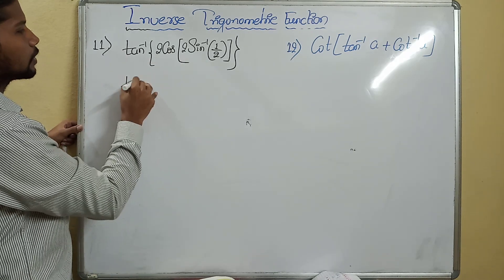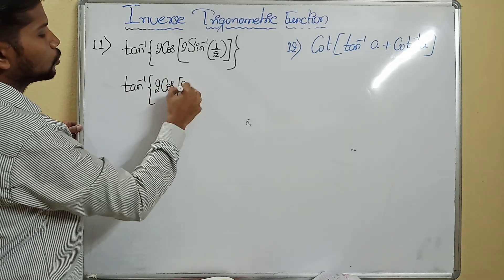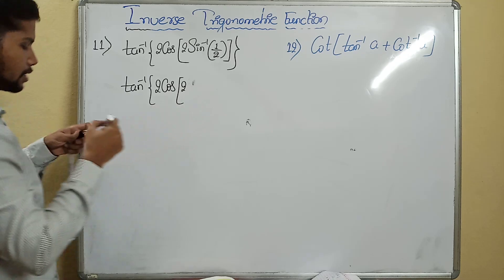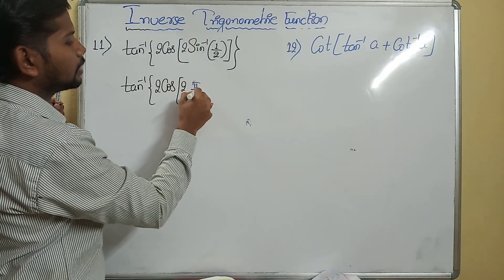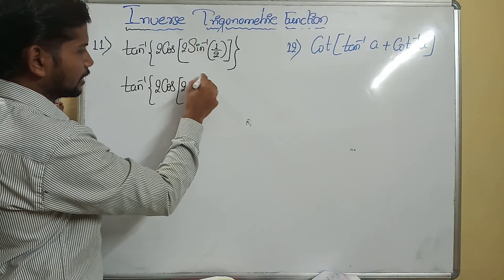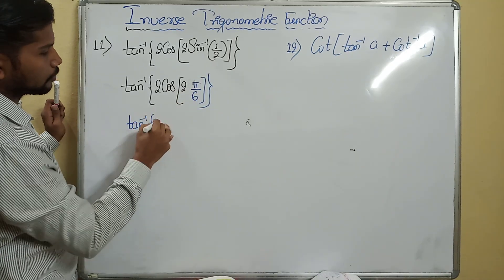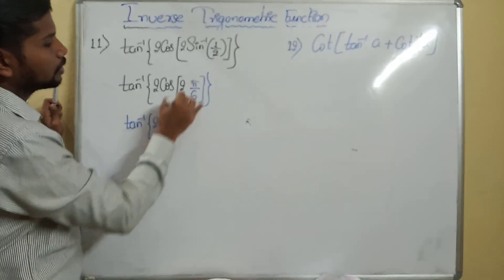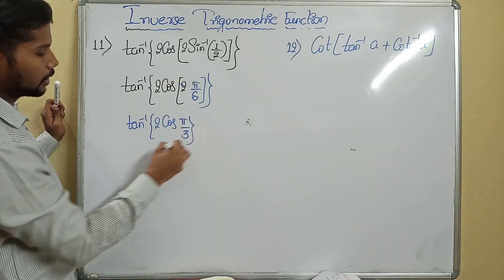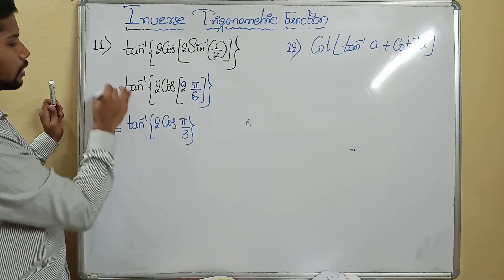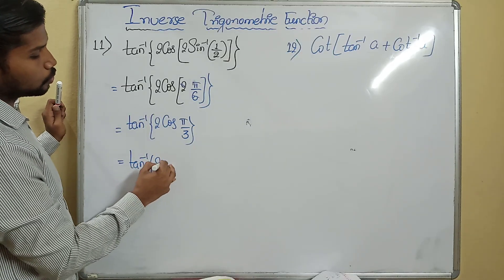Let it be tan inverse of 2 cos of 2 sine inverse of 1 by 2. Sine is having the value 1 by 2 for which angle? Yes, exactly it is pi by 6. So it is tan inverse of 2 cos of (2 × pi/6), the 2 and 6 cancel, giving pi by 3.